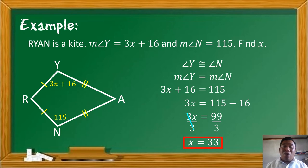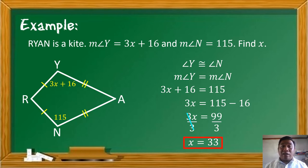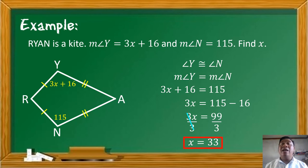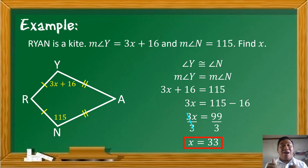Let's verify: if angle N is 115, then angle Y should also be 115. Substituting X equals 33 into 3X plus 16: 3 times 33 is 99, and 99 plus 16 equals 115. This confirms that the two opposite angles are indeed congruent.